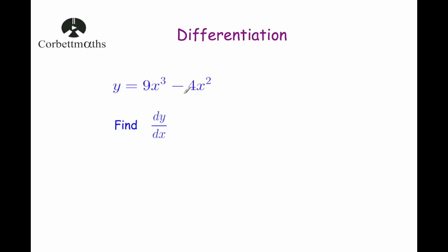Our next example: y equals 9x cubed minus 4x squared, and we've been asked to find dy by dx. Differentiating each term separately: for 9x cubed, bringing the 3 down gives 9 times 3 equals 27, so 27x squared. For minus 4x squared, bringing the 2 down gives minus 4 times 2 equals minus 8, so minus 8x. So dy by dx equals 27x squared minus 8x.